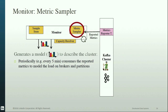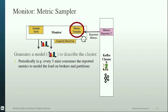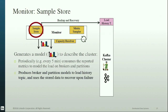The metric sampler retrieves reported metrics from the internal topic and creates samples for modeling load on brokers and partitions. The monitor aggregates these samples to create broker and partition windows, performing extrapolations or estimations as needed based on sample quality and quantity. The sample store enhances fault tolerance by periodically backing up historical load information to persistent store — using two internal topics for broker and partition load histories — so Cruise Control avoids data loss and cold starts upon transient failures.